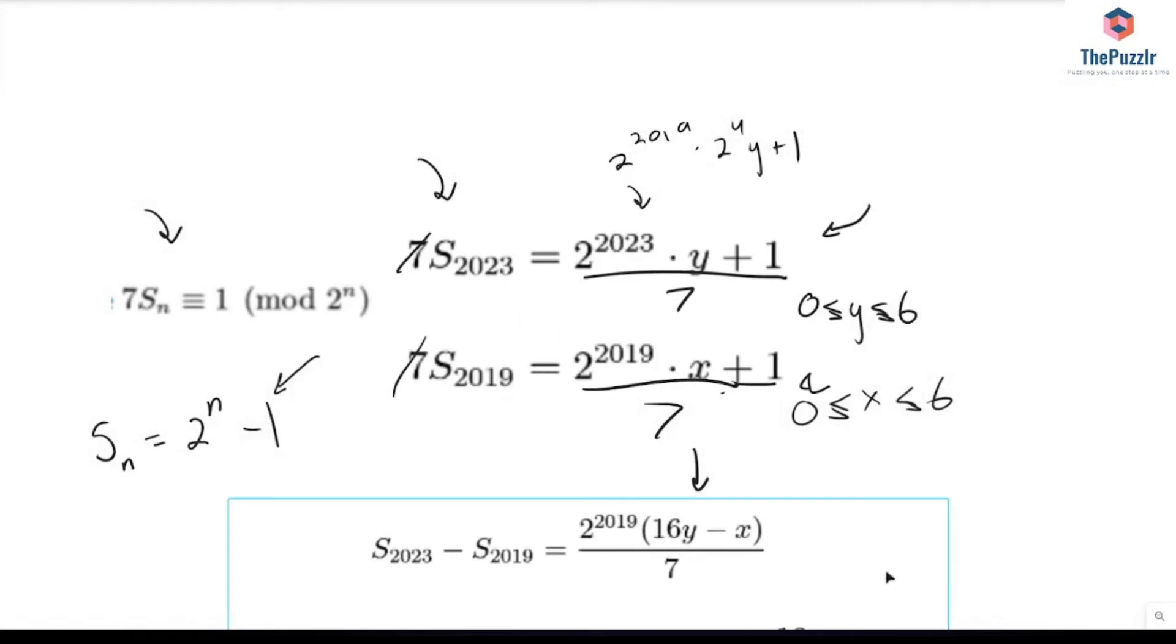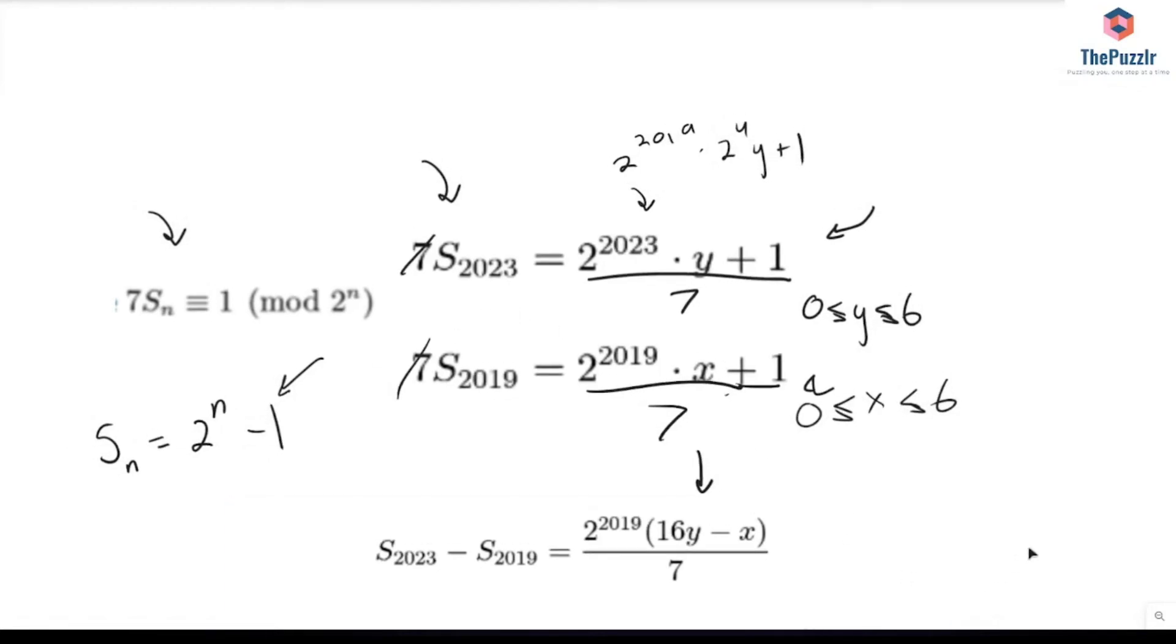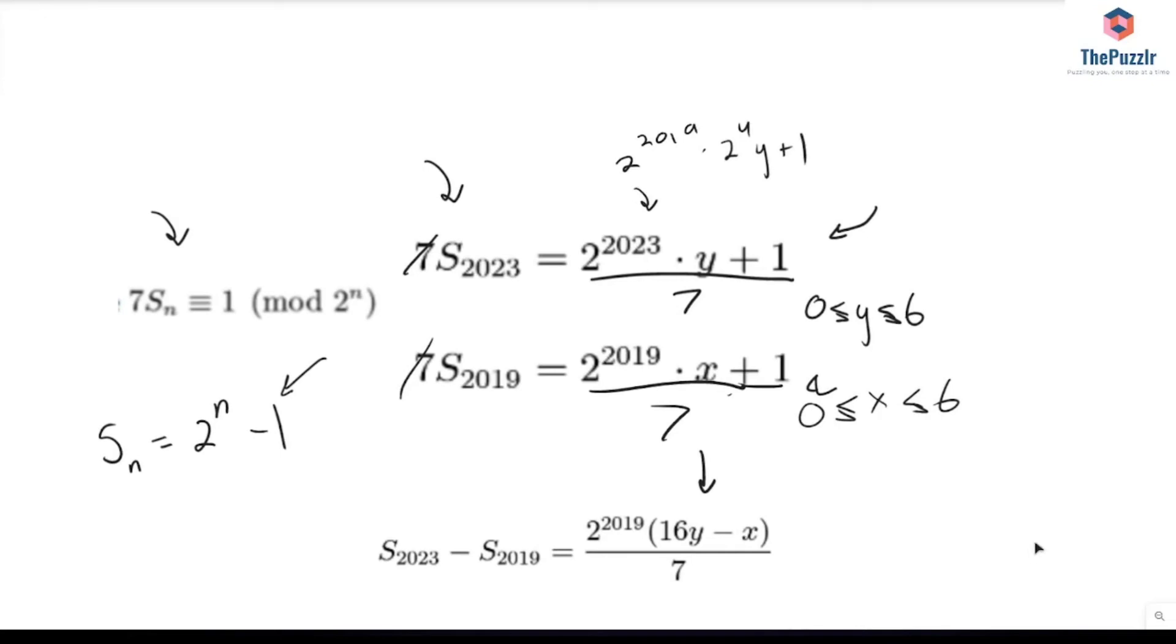So then what do we do from here? Well, there's not too many choices that we need to try for y and x now. We can just try different values of y and see what happens. If y is 0, 1, or 2, then this right here is going to make it so that x must be negative. But if we look back at the answer choices, that cannot happen. What if y is 3? If y is 3, then we need 16y minus x to be divisible by 7. So 16y minus x, that's going to give us 48 minus x over 7, and this is going to be an integer. So this is going to give us that x equals 6.